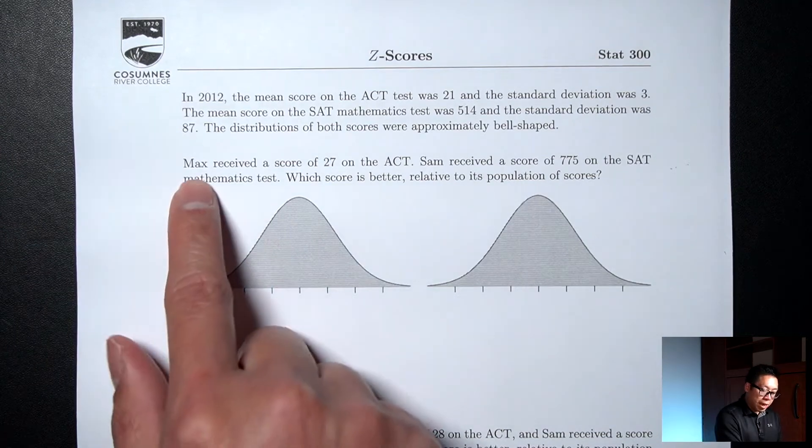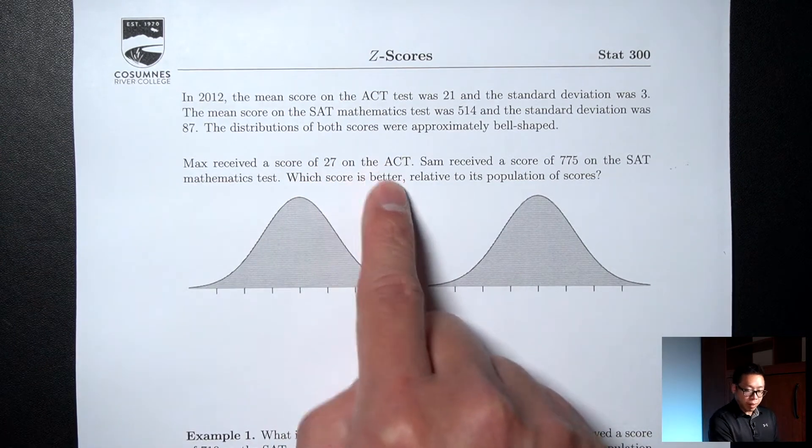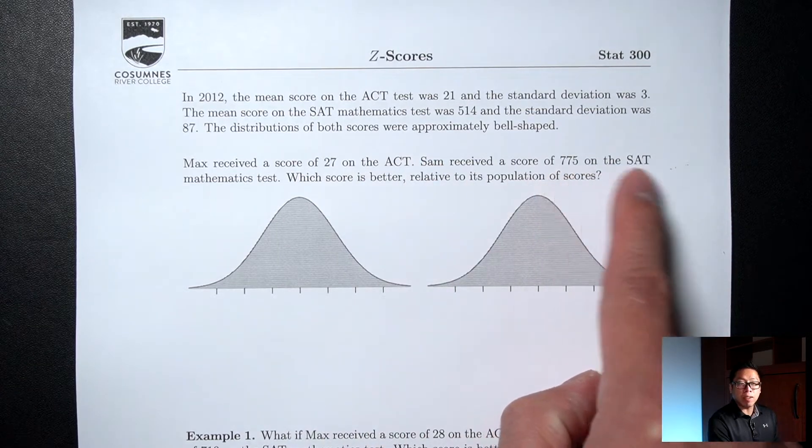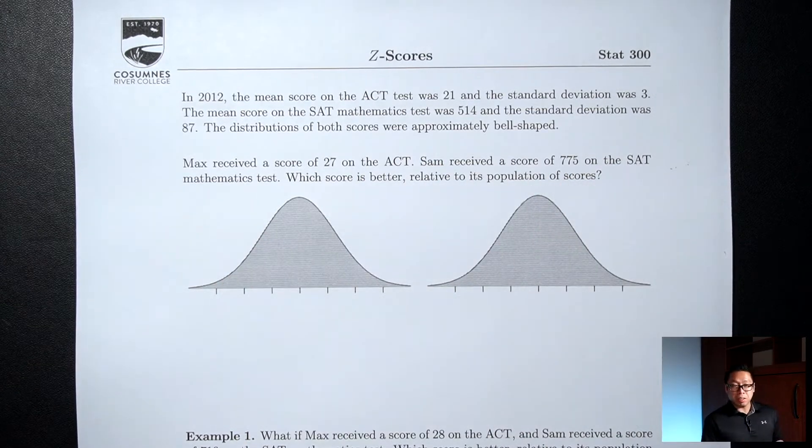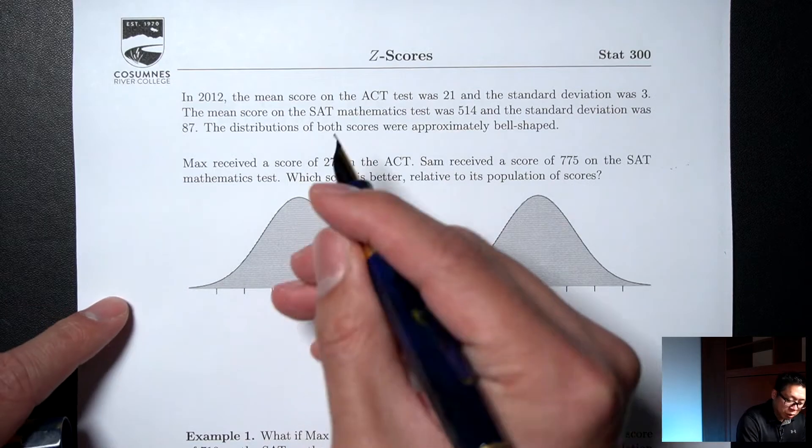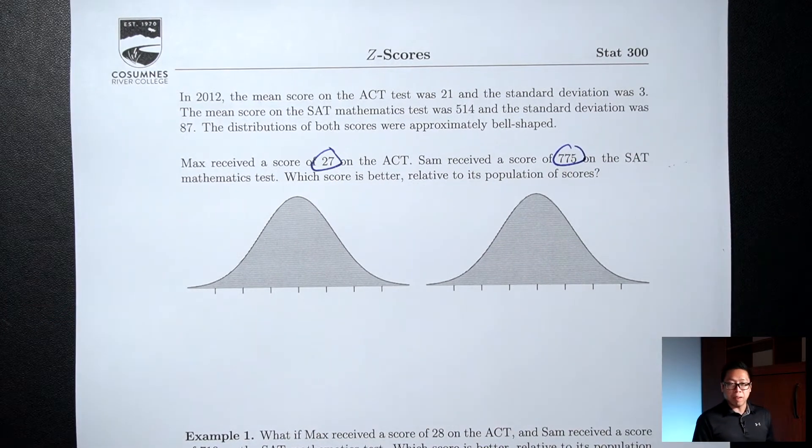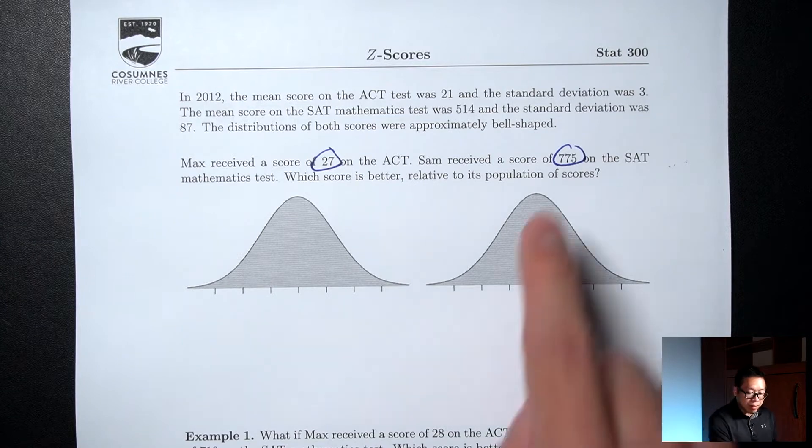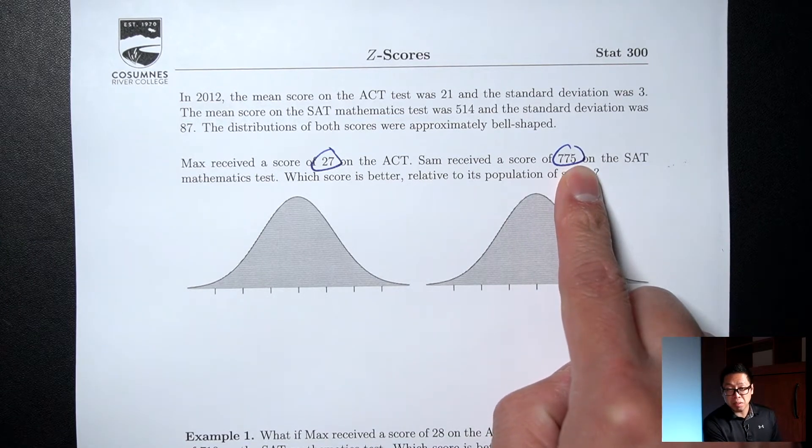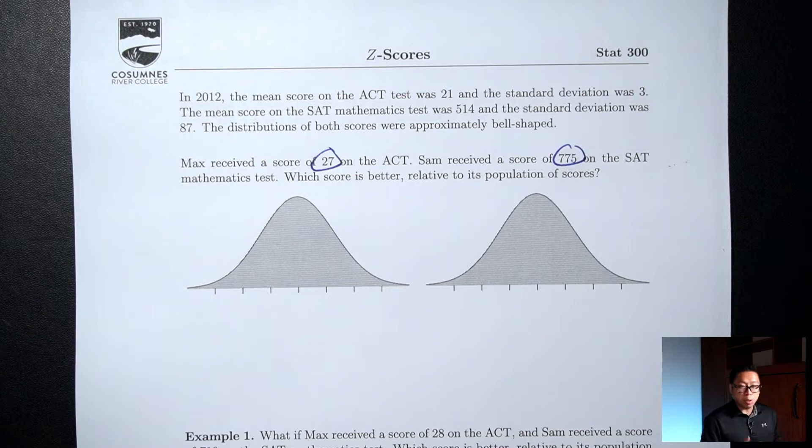The situation we have here is Max got a 27 on the ACT, Sam got a 775 on the SAT Math, and the question is which one is better? 27 on the ACT or 775 on the SAT Math? Can we say that 775 is better because it's bigger? Well no, because these are two different tests that are graded on two different scales.